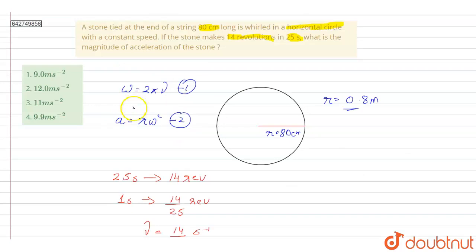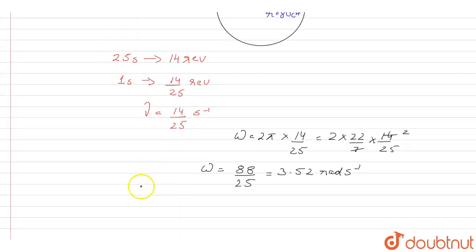Now to calculate the magnitude of acceleration, we have omega from equation 1, so we'll put this value in equation 2 and put the radius that is 0.8, and we'll get the acceleration.